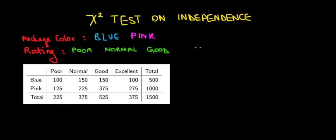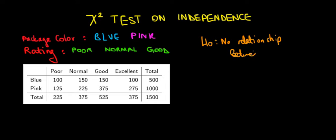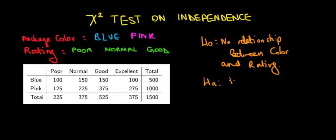In statistics, in hypothesis language, the null hypothesis is that there is no relationship between color and rating. If that is rejected, the alternative hypothesis is that there is a relationship between color and rating.